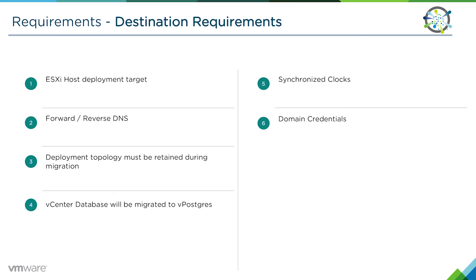The vCenter database will be migrated to an embedded vPostgres database. This holds true if you're running with an external Oracle or external Microsoft SQL database, as the vCenter server appliance 6.5 only supports the embedded vPostgres database. Time synchronicity is also important for the destination, and we also require AD domain credentials to allow the new vCenter server appliance to join the Active Directory domain.